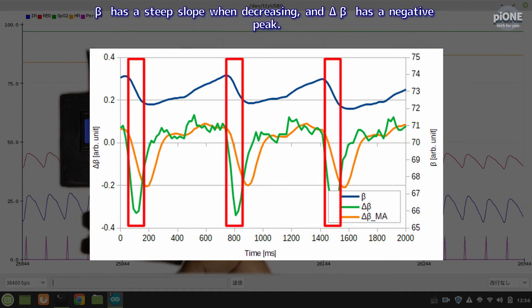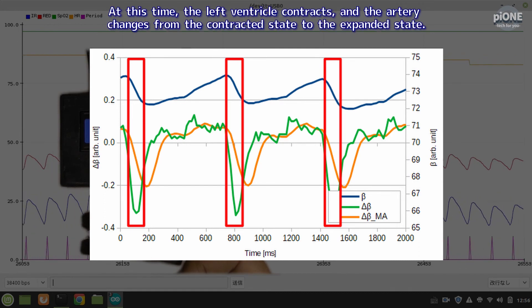Beta has a steep slope when decreasing, and delta-beta has a negative peak. At this time, the left ventricle contracts, and the artery changes from the contracted state to the expanded state.